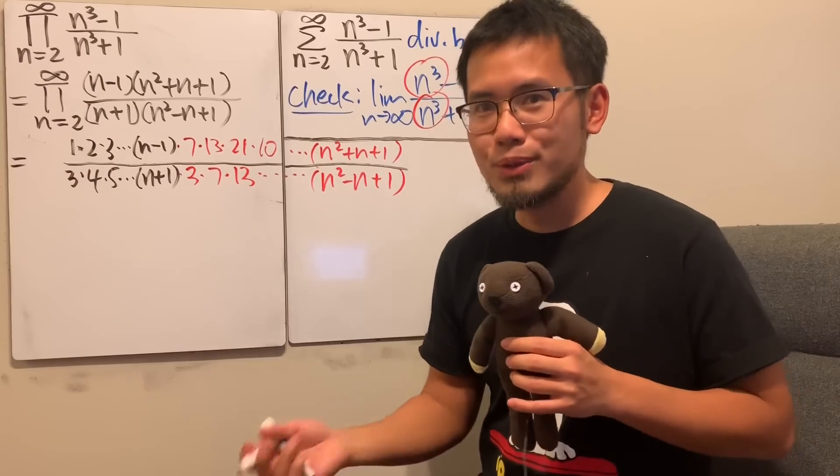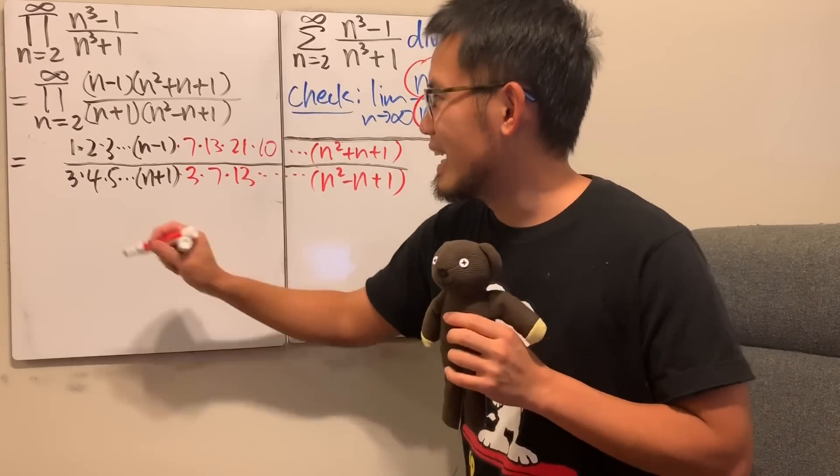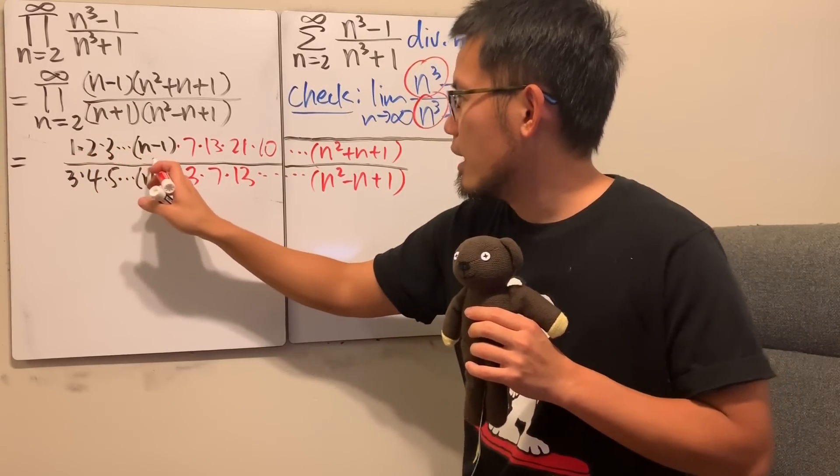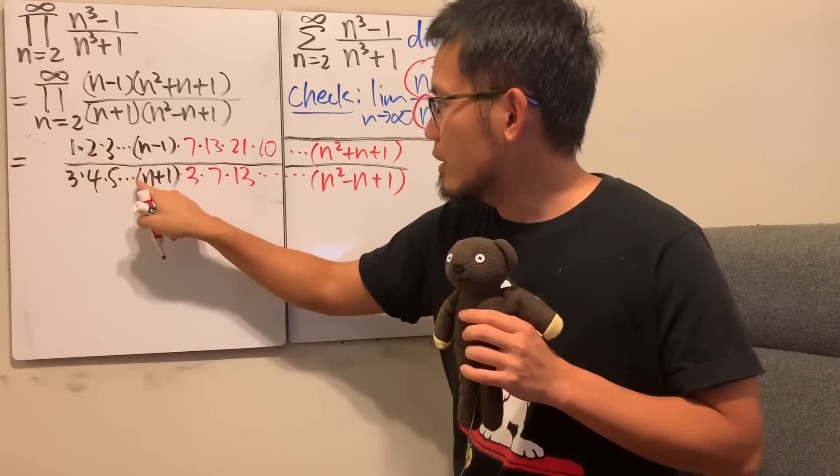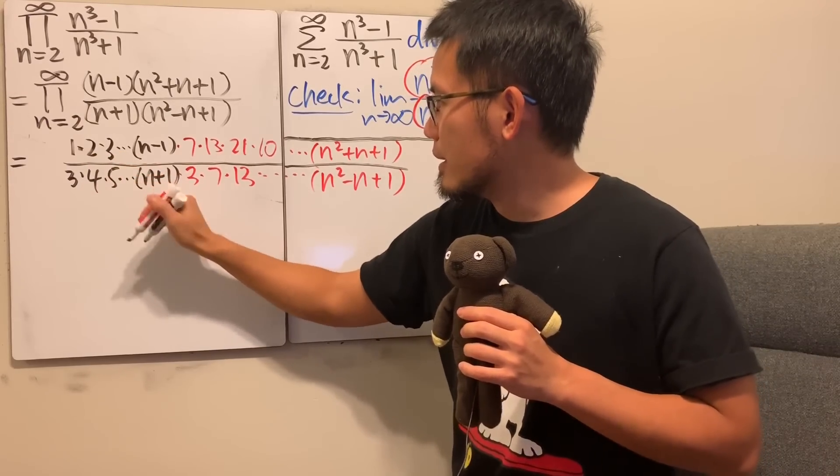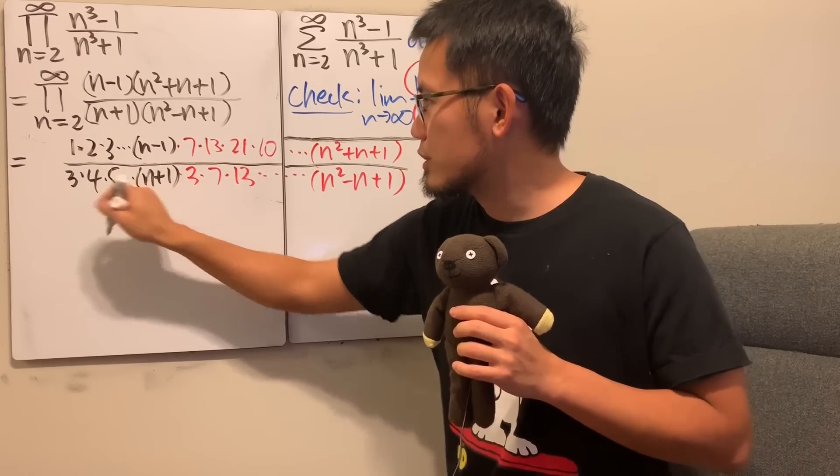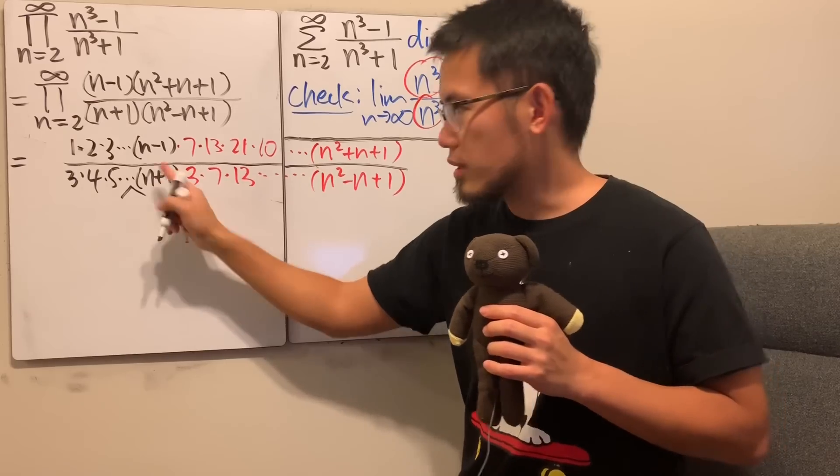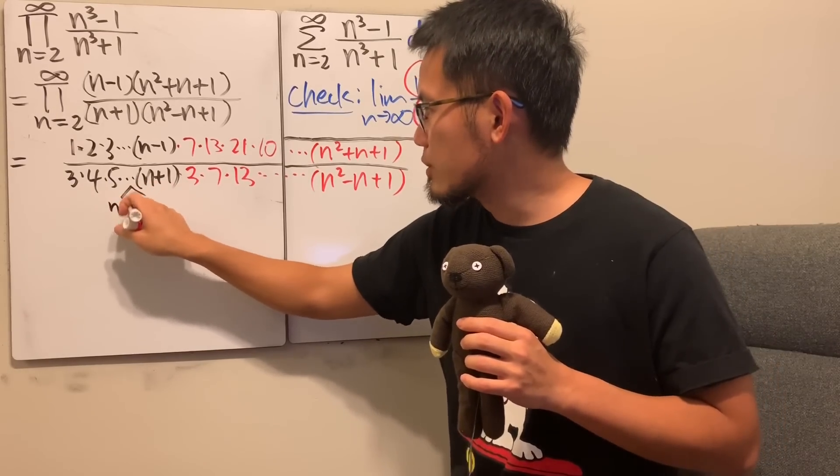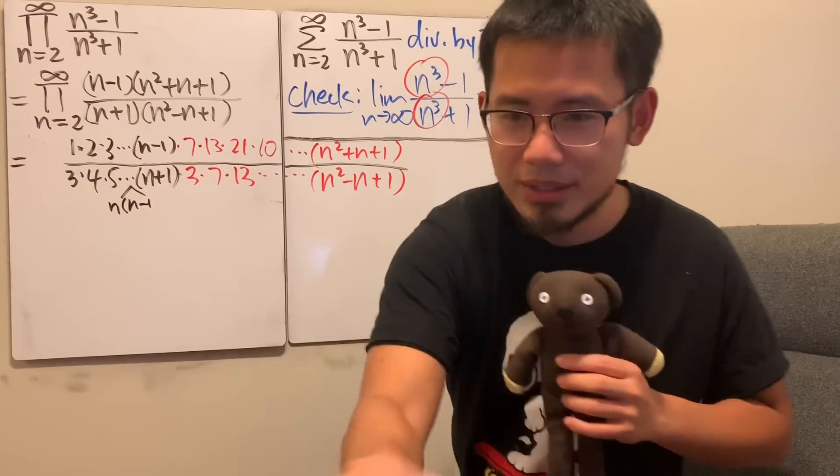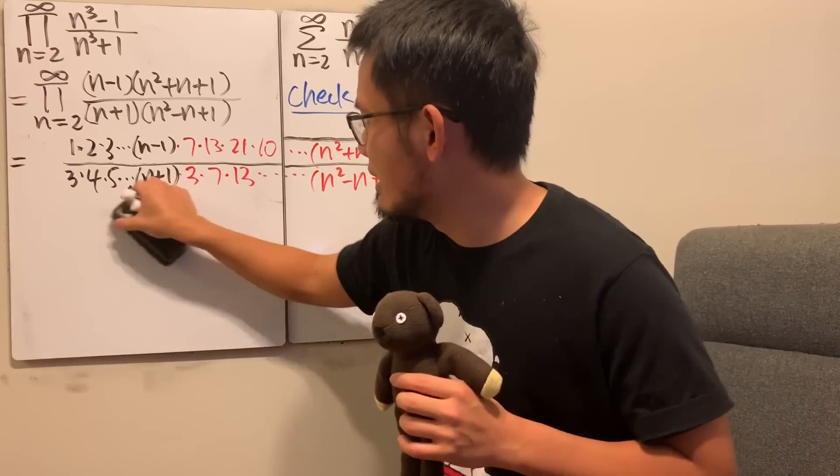Now, it's about time to do our cancellations. You see that, uh-huh, well, here we have, okay, it's 3 up to n plus 1. So, technically, we have n, and also n minus, oops.